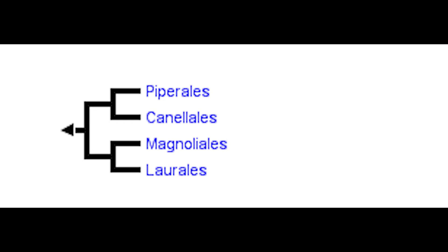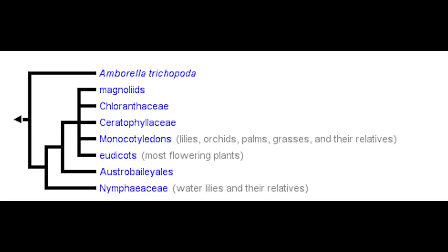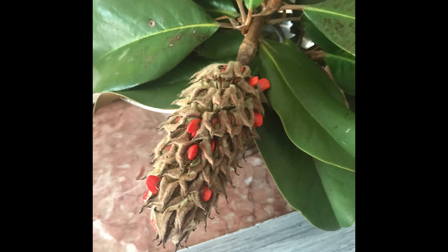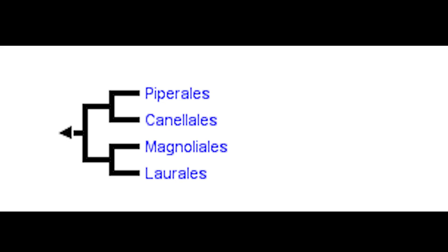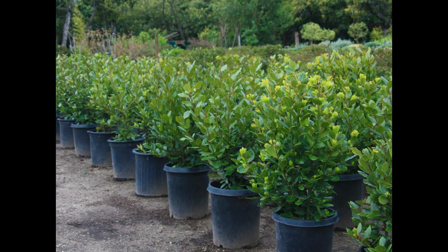Magnolids — such as magnolia and avocado trees — are some of the most basal angiosperms, meaning they have some features similar to gymnosperms, like cone-like stamens. Magnolids include magnolias and the avocado tree, but also black pepper, which grows like a vine, and laurel, which is a bush.